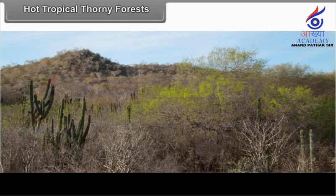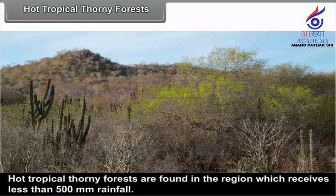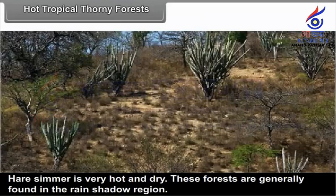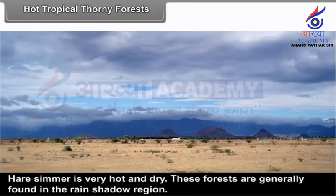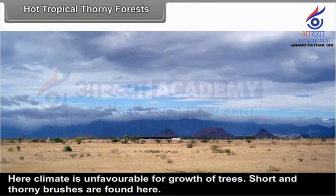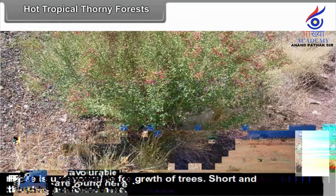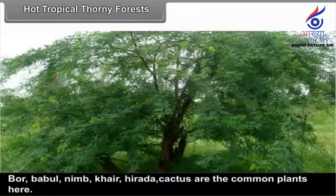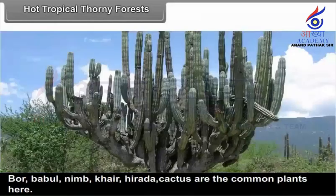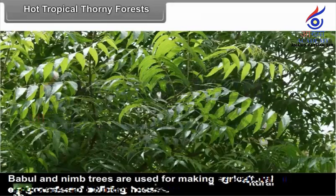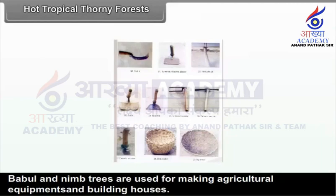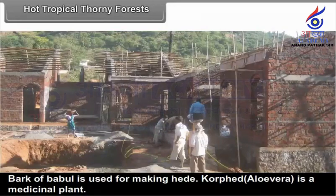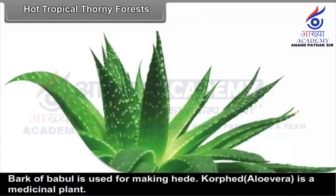Hot tropical thorny forests are found in regions which receive less than 500 mm rainfall. Summer is very hot and dry, and these forests are generally found in the rain shadow region where the climate is very unfavorable for the growth of trees. Short and thorny brushes are found here. Bor, Babul, Neem, Khair, Herida, and Cactus are the common plants. Babul and Neem trees are used for making agricultural equipment and building houses. Bark of Babul is used for making hide. Aloe vera is a medicinal plant.